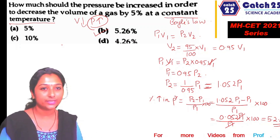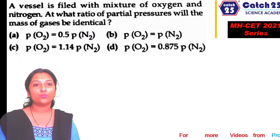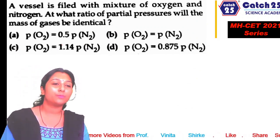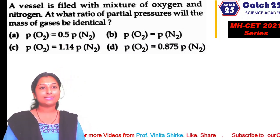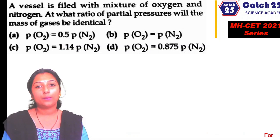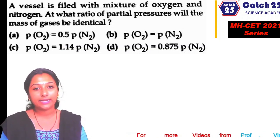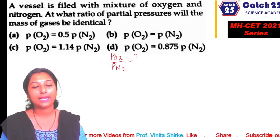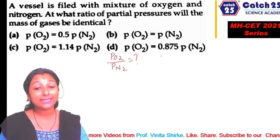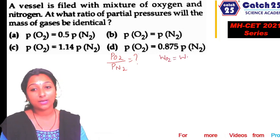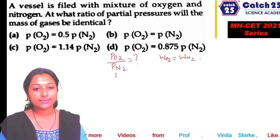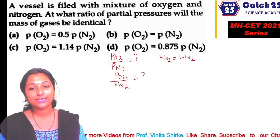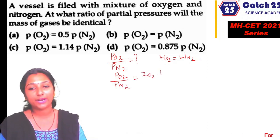Next question: A vessel is filled with a mixture of oxygen and nitrogen. At what ratio of partial pressures will the mass of the gases be identical? We need to calculate the ratio of partial pressure of oxygen to that of nitrogen, given that mass of oxygen equals mass of nitrogen. Using Dalton's law: partial pressure equals mole fraction × total pressure.